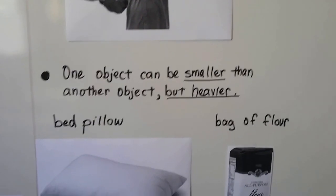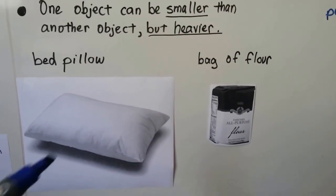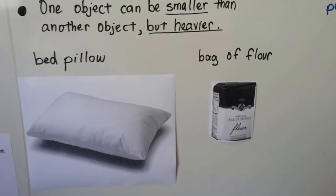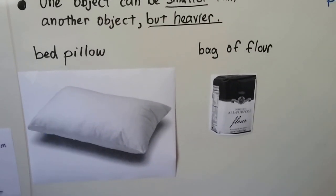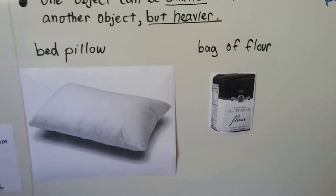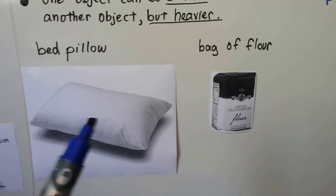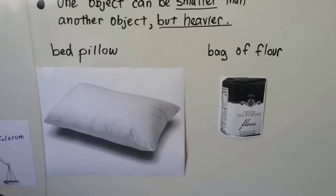One object can be smaller than another object, but heavier. A bed pillow is not as heavy as a bag of flour, and the bag of flour is smaller. This bed pillow is filled with air. We can squish it and squish the air out. It's not as dense and doesn't have as much mass as the bag of flour. So the flour is heavier. It's got more mass.